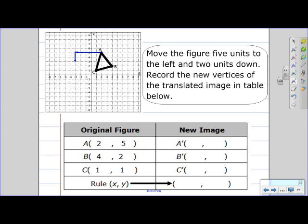Okay, so now I can mark this as A prime which is at negative three, three. And then B, same process.